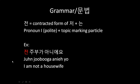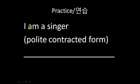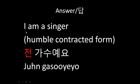Let's look at the sentence 'I am not a housewife,' 전 주부가 아니에요. 전 is the contracted form of 저, which means the pronoun I plus the topic marking particle 는. So how would you say 'I am a singer' using the polite contracted form of I plus the topic marker? The answer is 전 가수예요.